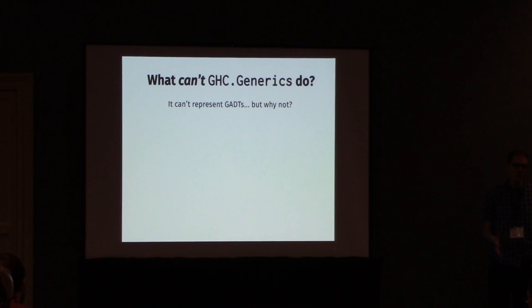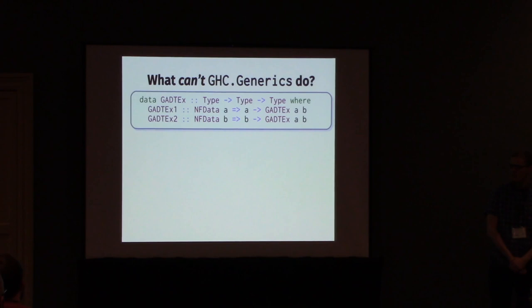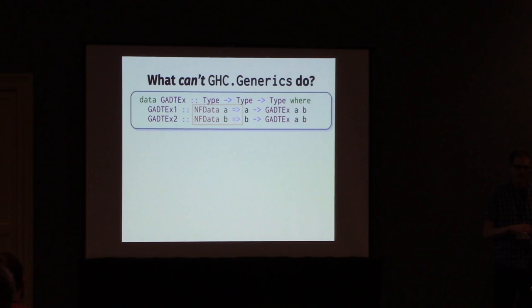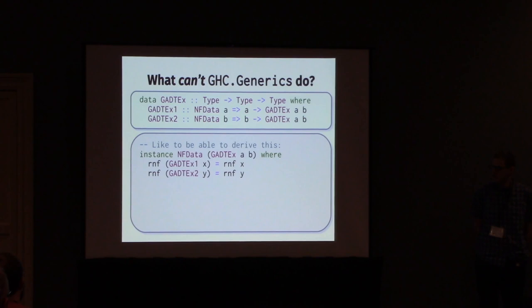We'll need an example of some data type to look at. Here's one that I just conjured up. We're using GADT syntax here - that's one thing to take note of. The thing that really makes this different from the data types we've seen previously is this part: we have some context here, tucked away underneath each constructor. They're existential contexts. These contexts are only going to come into scope if we pattern match on the constructors explicitly.